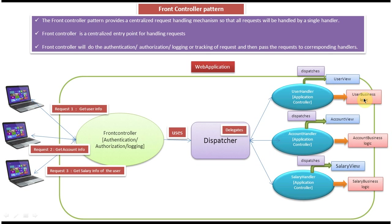Once the User Handler receives the get user info request, it calls the User Business Logic to get the user information from the database. The User Business Logic calls the DAO layer, which talks to the database, retrieves the user information, and passes it back up through the User Business Logic to the User Handler. The User Handler then dispatches the request to the User View — a JSP presentation layer — which presents the user information to the client.